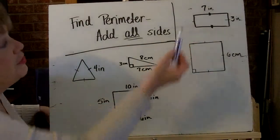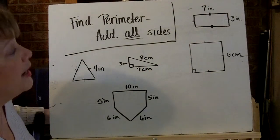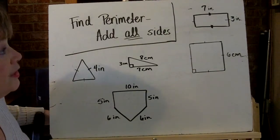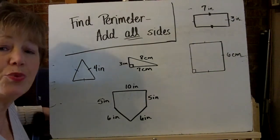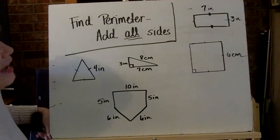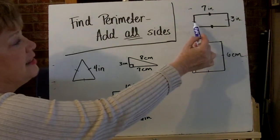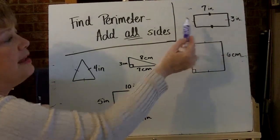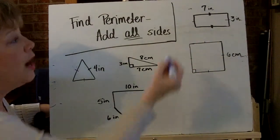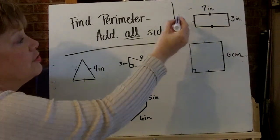Over here at the top, I have a rectangle. That rectangle is seven inches by three inches. And I know because of the markings here, a single dash and a single dash, that means those are the same measurements. So I could know that that is also three inches.